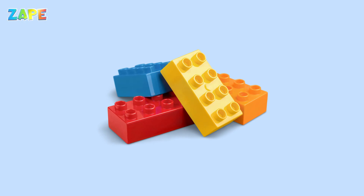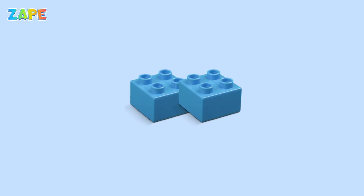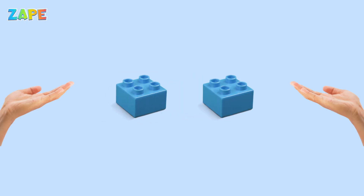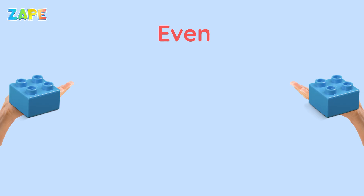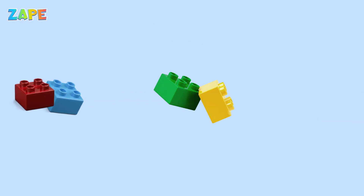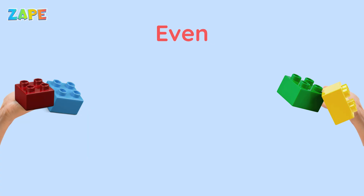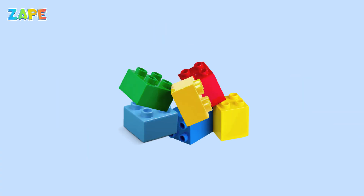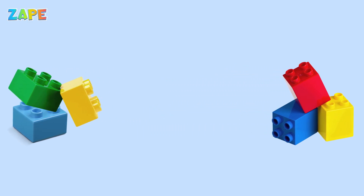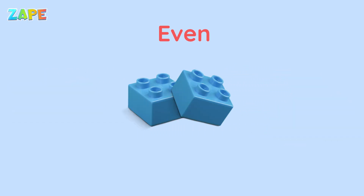Let's try with blocks. If I have two blocks, I can give one to each hand — that's even. Now four blocks: two in each hand, even again. How about six blocks? Three here, three there, still even. Even numbers are like best friends — they always share fairly.